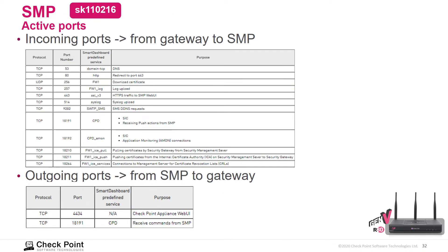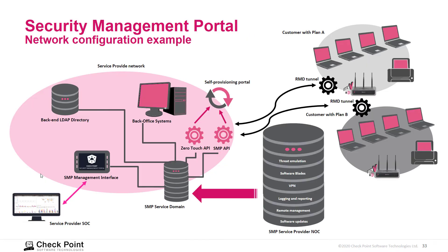The active ports from the gateways to the SMP — the incoming ports — are all listed here, and the outgoing ports from the SMP to the gateway are listed as well along with their functions. This shows an example Security Management Portal network configuration where one customer has a particular plan and another customer has a different plan. Self-provisioning through the API and zero-touch API deployment are also supported, with the SMP service provider determining which blades are enabled and managing the service domain, management interface, security operation center, and back-end LDAP directory.